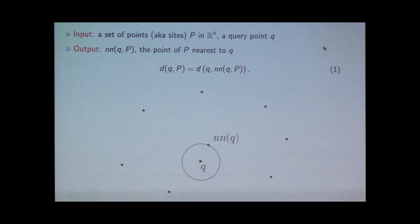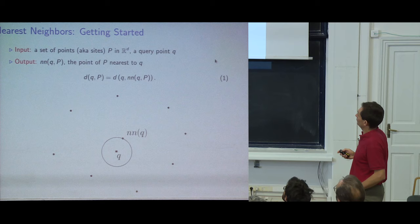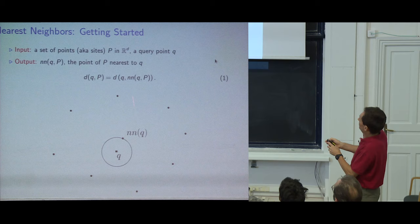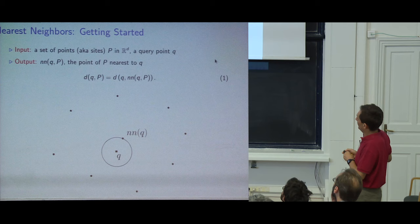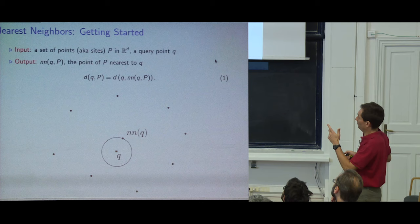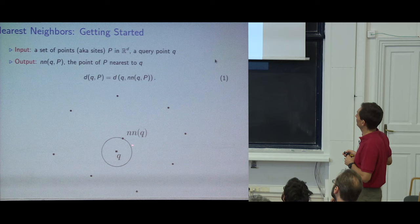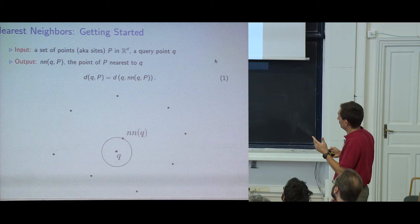Here is a simple example: processing a point cloud in Euclidean space R^d. We have a point cloud P and a query point q, and we want to find the nearest neighbor. Prosaically, you grow a ball centered on q, and the first point you hit is your nearest neighbor. This is the kind of problem we want to solve, but of course for general shapes it becomes more complex.